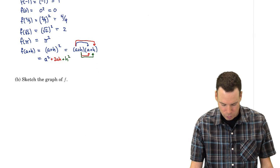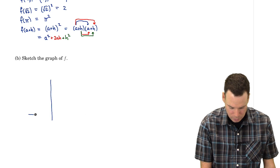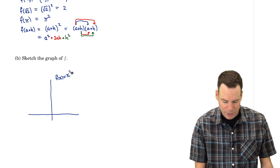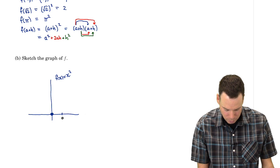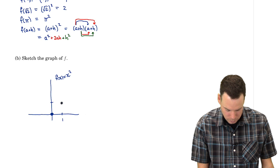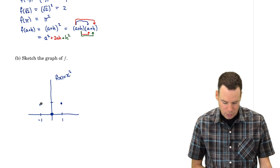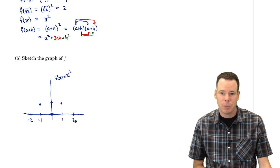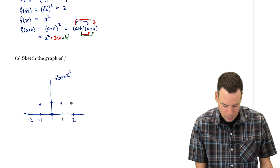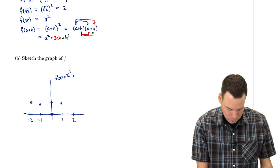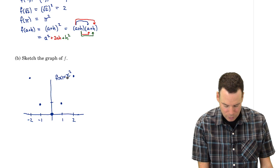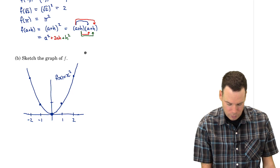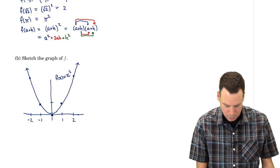Now we're going to sketch the graph of our function, going from the algebraic description to a visual representation. How do we sketch f(x) = x²? Using the values we computed: plugging in 0 gives 0, plugging in 1 gives 1, plugging in −1 gives 1, and so on. Using enough values, we can see the graph is a parabola. Plotting those points and connecting them gives us the graph — a parabola with vertex at (0, 0) opening upward.